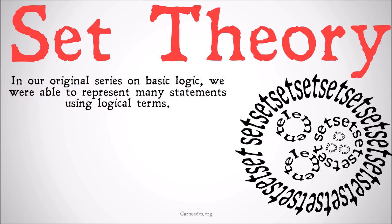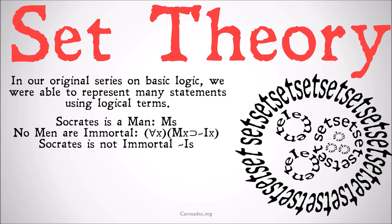In the original series we did on basic logic, we were able to represent many statements using logical terms. We could say Socrates is a man, we could say no men are immortal, we could say Socrates is not immortal, using letters to stand in for predicates and subjects, and then using the underlying logic to show the relationships between those predicates and subjects.